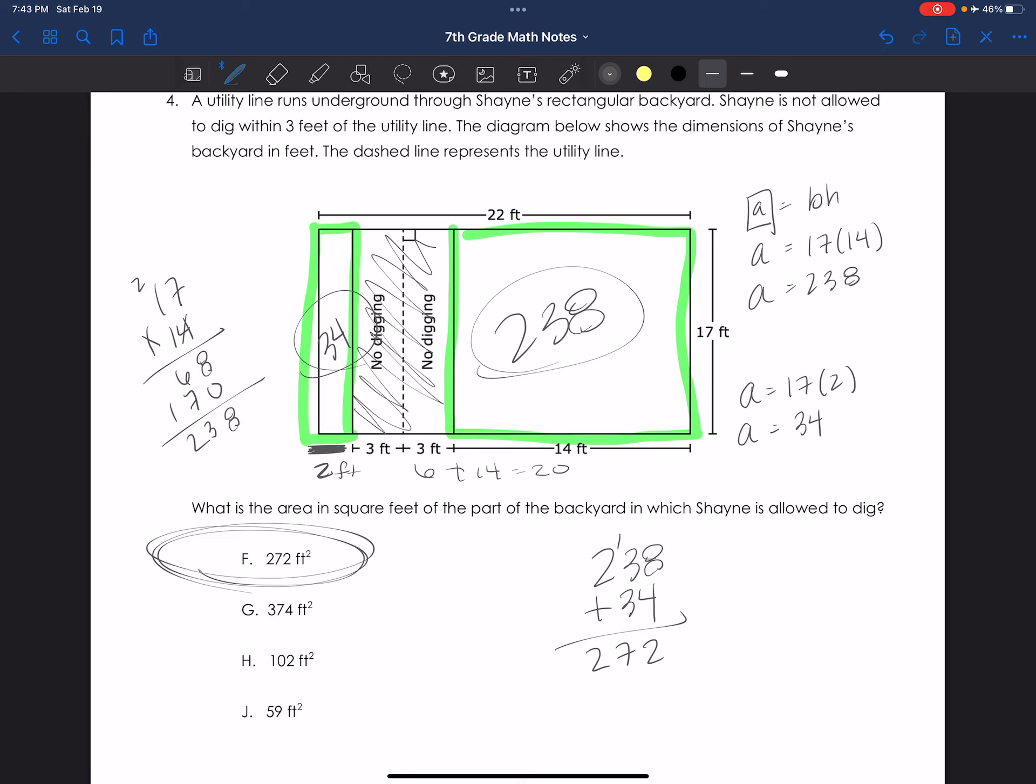If I wanted to check my work, I would multiply 22 times 17 to find the area of the entire thing. And then find the area of the no-digging part, which is 17 by 6. 7 times 6 is 42. And then subtract those two, which I still get 272.